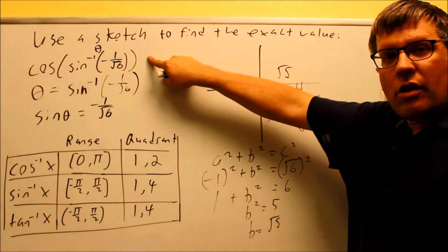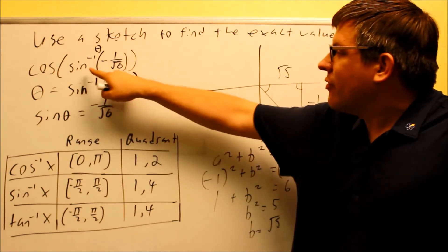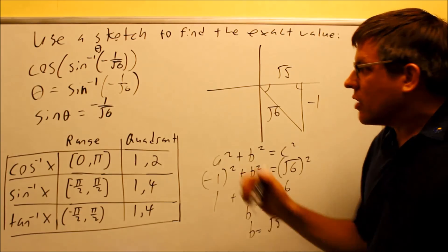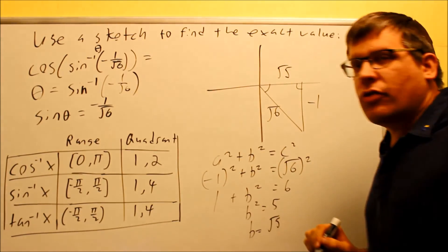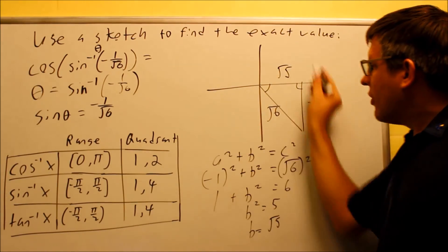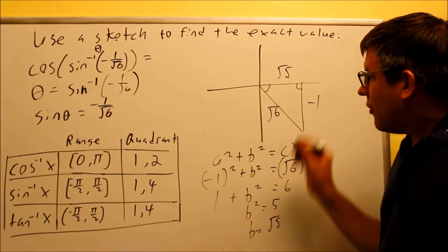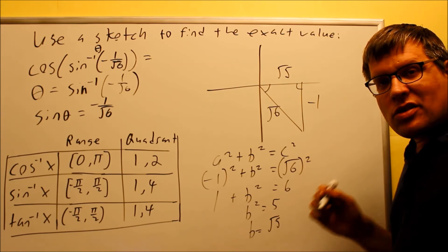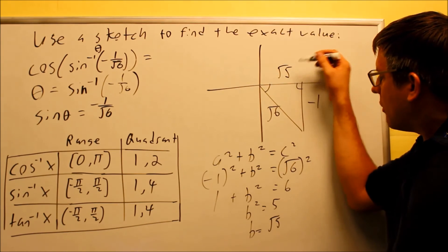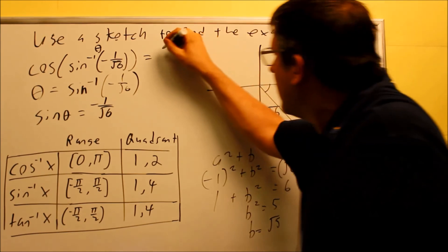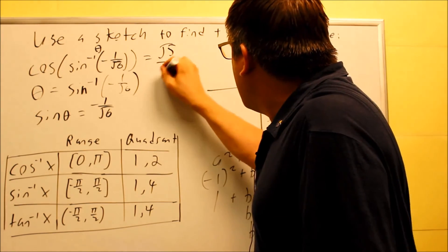I need to answer this question now. I want to answer cosine inverse sine negative 1 over root 6. So I want to write the answer for this problem. Now this says that out of the triangle that I have drawn already, I want to indicate cosine from this triangle. Now cosine is the adjacent over hypotenuse, adjacent is square root of 5, and hypotenuse is square root of 6.